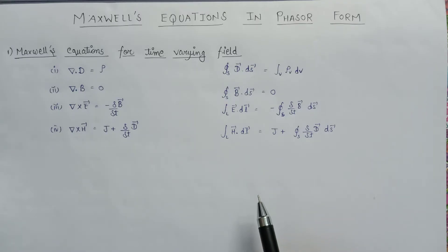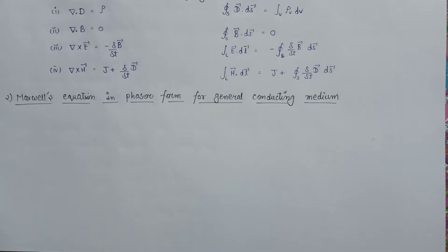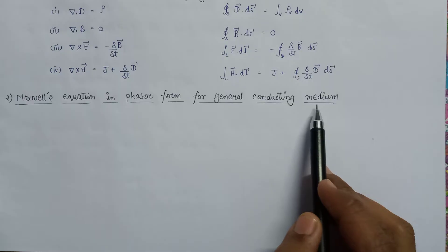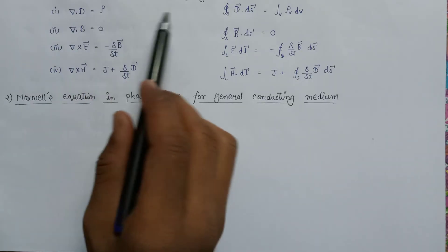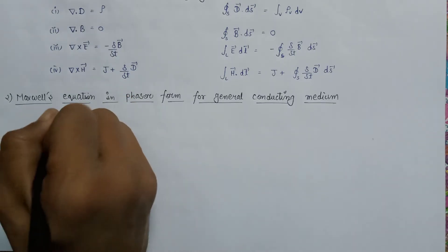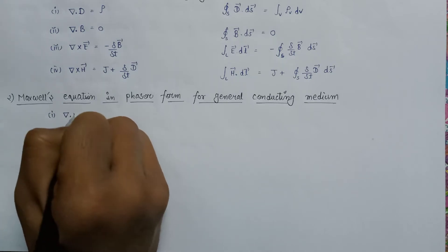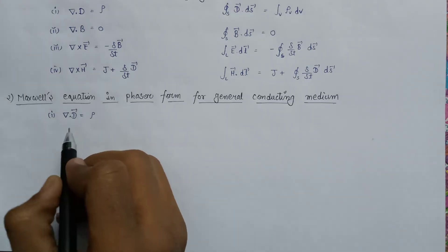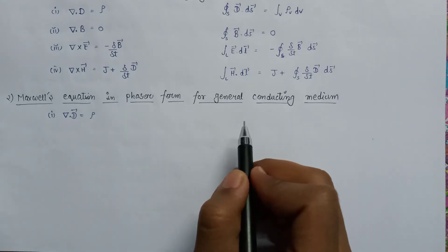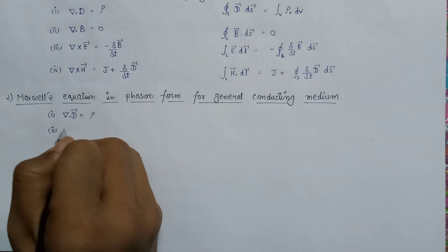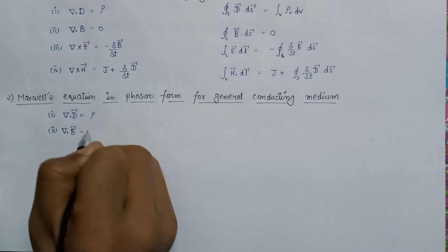Now let us look at Maxwell's equations in phasor form for a general conducting medium. Maxwell's first equation in phasor form is del dot D equals rho, which is exactly similar to the time-varying form. The second equation is also exactly the same: del dot B equals zero.